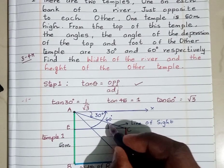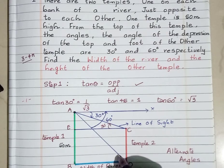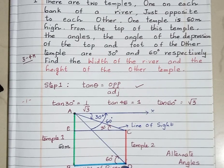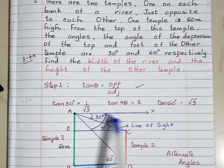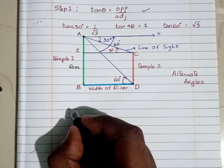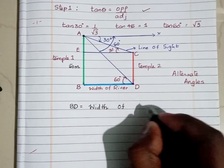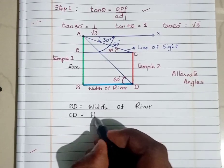Angle XAC equals angle ACE because they are alternate angles. In the same way, angle XAD equals angle ADB because they are alternate angles. There are two temples AB and CD which are on the bank of a river, just opposite to each other. The angle of depression from the top of temple 1 to the top and foot of temple 2 is 30 degrees and 60 degrees. We have now converted the statement into a figure. BD is the width of the river. CD is the height of temple 2, which we need to find out.